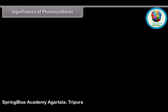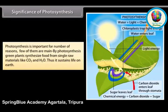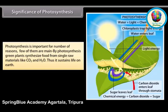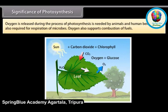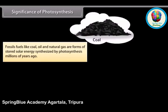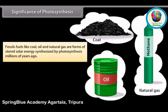Photosynthesis is important for a number of reasons. Green plants synthesize food from simple raw materials like CO2 and H2O, thus sustaining life on earth. Oxygen released during photosynthesis is needed by animals and human beings for respiration of microbes, and also supports combustion of fuels. Fossil fuels like coal, oil, and natural gas are forms of stored solar energy synthesized by photosynthesis millions of years ago.